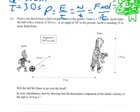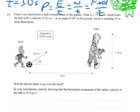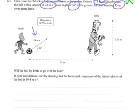Part c: Ernie and Jacob. Jacob's son kicks the ball towards Ernie in the garden. This is going to be projectile motion, you can tell already. Ernie is 1.75 metres tall. Jacob kicks the ball with an initial velocity of 24 metres per second, as I can see from the diagram, at an angle of 36 degrees, also on the diagram, to the ground. Jacob is standing 35 metres away from Ernie. I think this video actually appears or this question gets answered at another place on this site. Will the ball hit Ernie or go over his head? That is the first question.